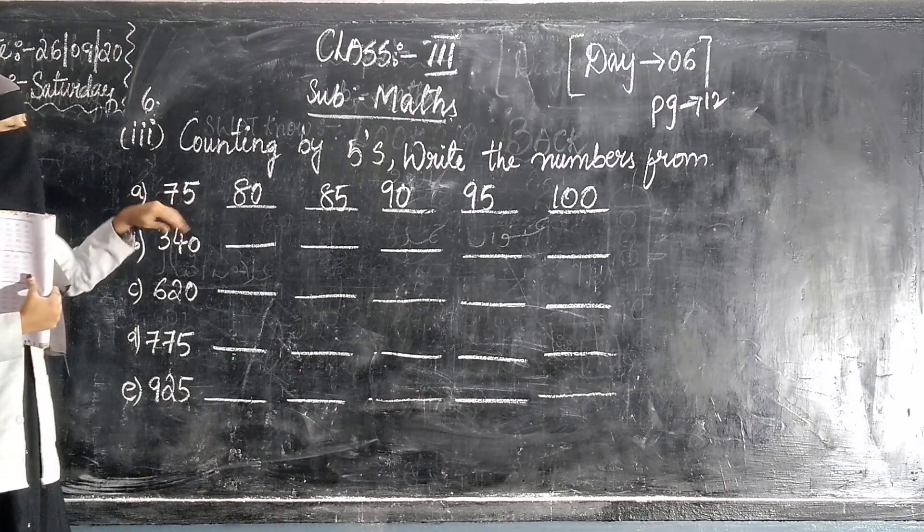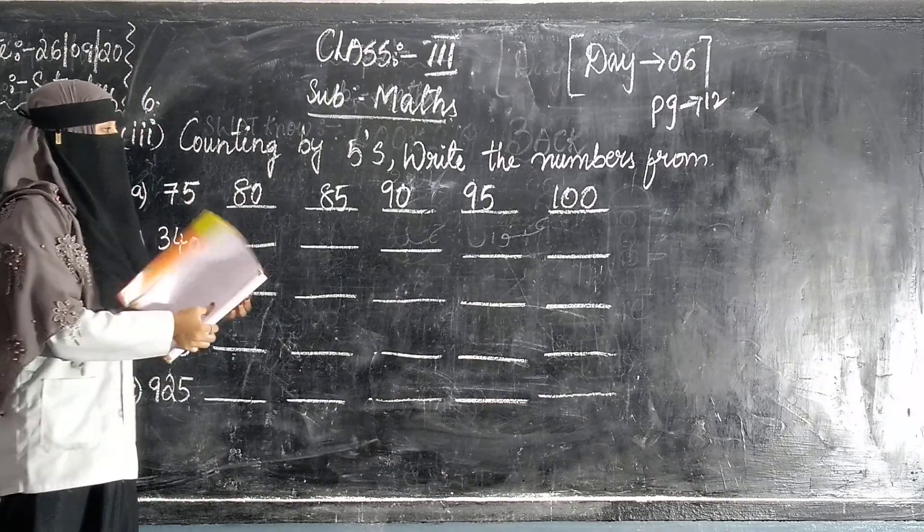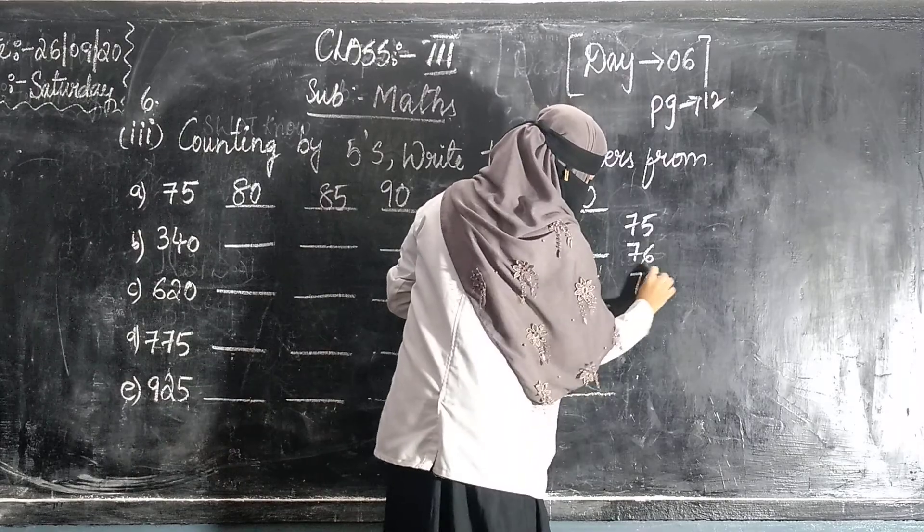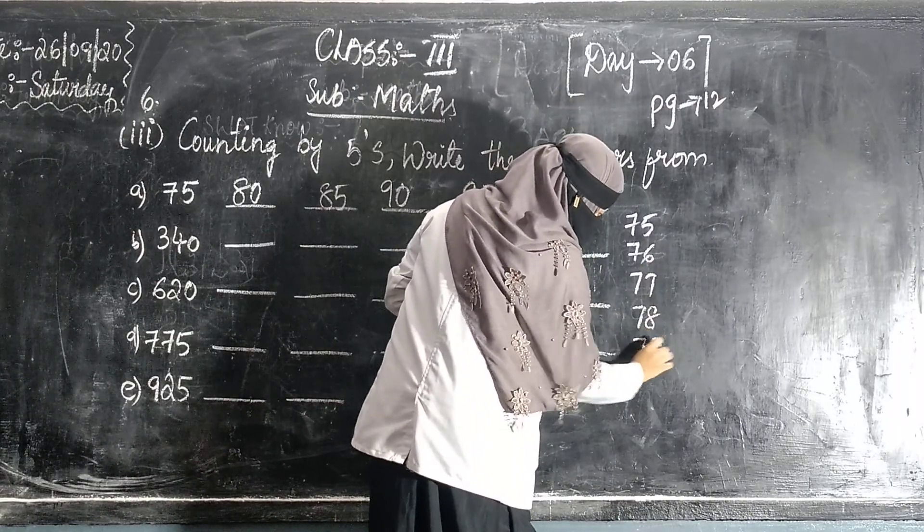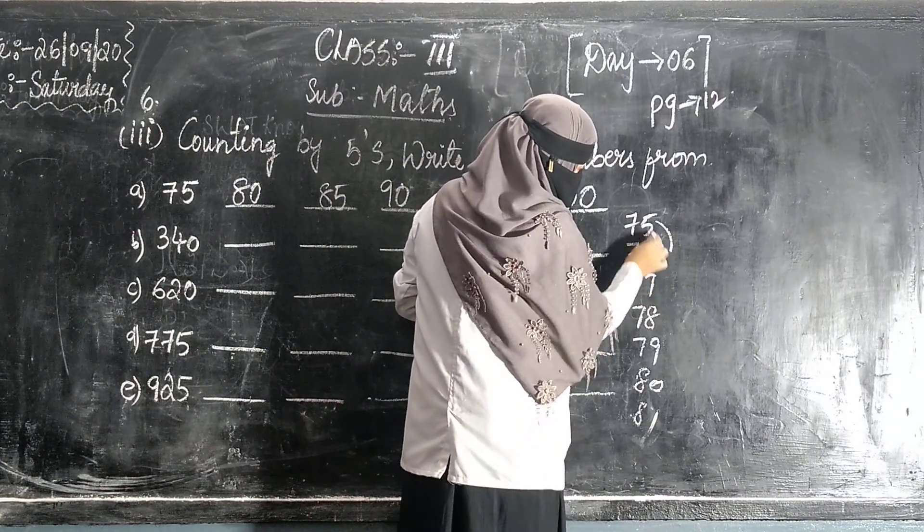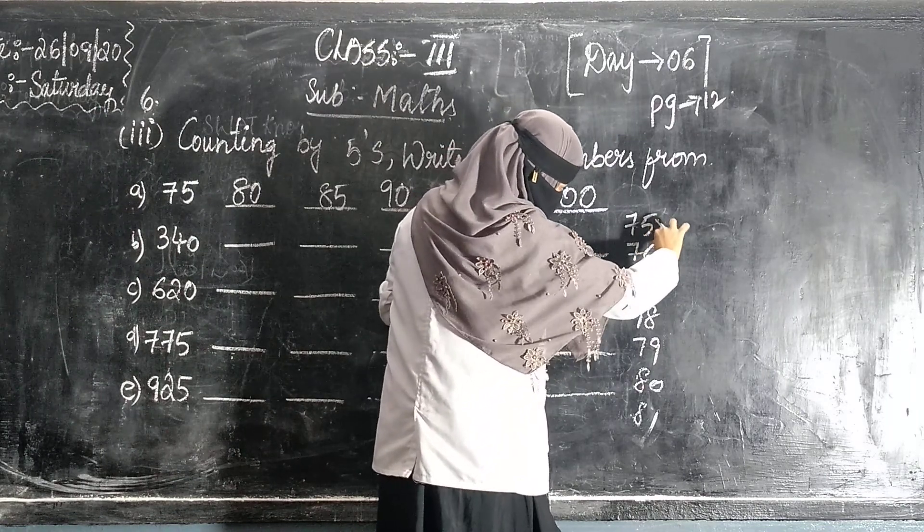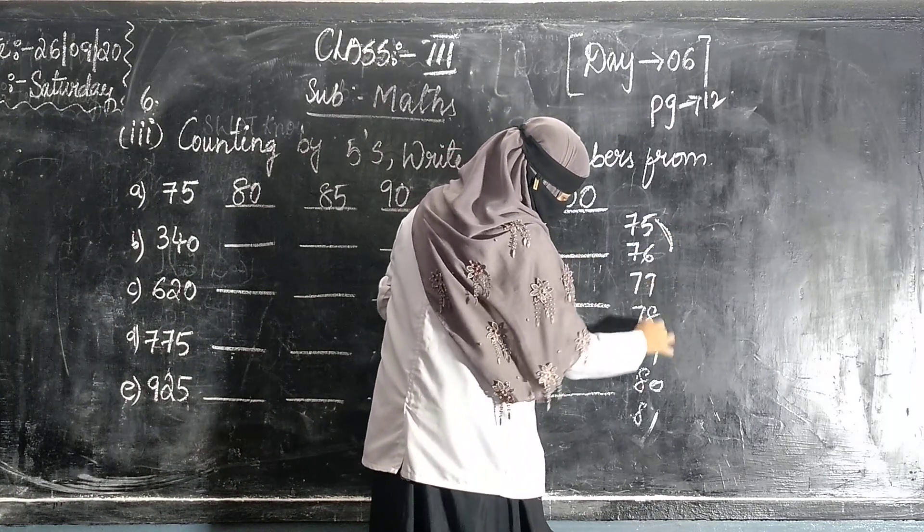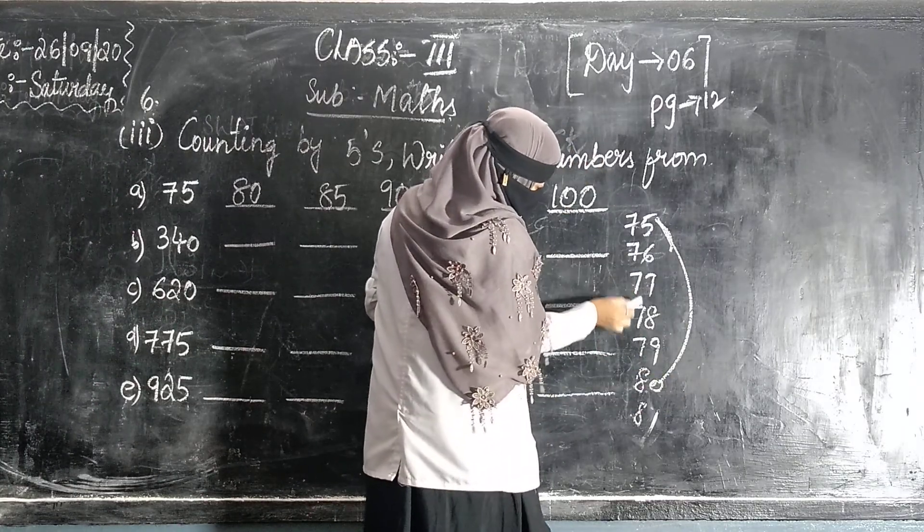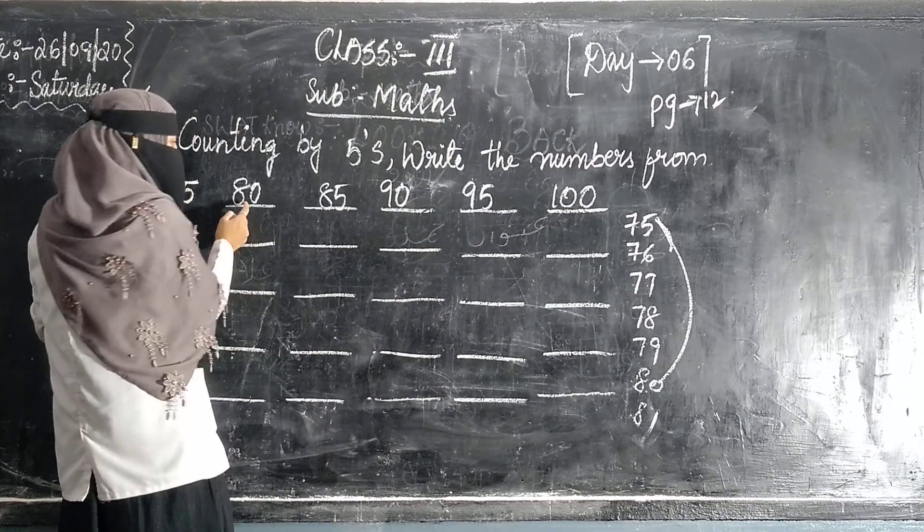75, skip 5, 75. And add 5. Example: 75, 76, 77, 78, 79, 80, 81. 1, 2, 3, 4, 5. So what do we get? 80.